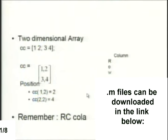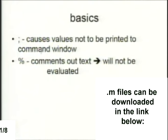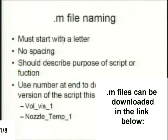If you put a semicolon after a line, then the values of that line will not be printed to the command window. The percent sign is how you make comments in M-files — just good to know. For M-file naming, they have to start with a letter; if they start with a number you'll get an error. No spaces — if you want to separate words, use underscores. It should describe the purpose of the script. I like to use a number at the end of the name so you know which version you're working with, like volume_visualization_1, 2, 3, 4.